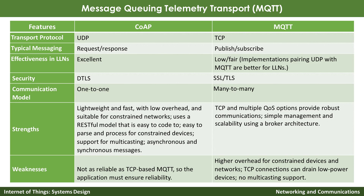MQTT's strengths include guaranteed delivery via TCP, multiple quality-of-service options with three levels, robust communication, simple management, and it is very scalable because of the broker architecture. However, there is a bit of an issue with its centralized nature. The weaknesses of CoAP include that because it uses UDP, it is not as reliable as TCP-based MQTT, so the application must ensure reliability. MQTT has higher overhead for constrained devices, TCP connections can drain the battery of low-power devices, and there is no multicast support.